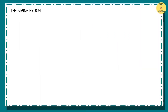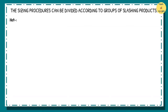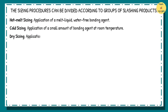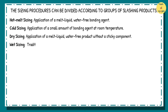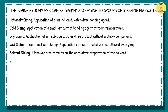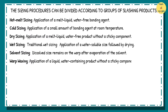The sizing procedures can be divided according to groups of slashing products: Hot melt sizing — application of a melt liquid, water-free bonding agent. Cold sizing — application of a small amount of bonding agent at room temperature. Dry sizing — application of a melt liquid, water-free product without a sticky component. Wet sizing — traditional wet sizing, application of a water-soluble size followed by drying. Solvent sizing — dissolved size remains on the warp after evaporation of the solvent. Warp waxing — application of a liquid, water-containing product without a sticky component.